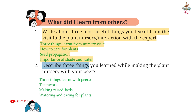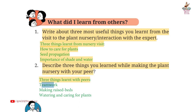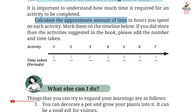Second: describe 3 things you learned while making the plant nursery with your peers. Answer: first, teamwork; second, making raised beds; third, watering and caring for plants. Time spent on each activity: Activity 1 — 2 periods; Activity 2 — 2 periods; Activity 3 — 3 periods; Activity 4 — 2 periods; Activity 5 — 4 periods; Activity 6 — 3 periods; Activity 7 — 1 period.